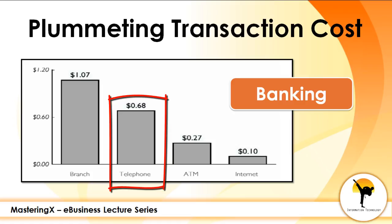There is also an initial cost to build up the infrastructure — the telephone network — which should be efficient to handle the telephone calls. For the customer, there is no traveling cost, only the initial cost to have the telephone. As a result of all of this, the cost is much higher than the internet and ATM modes, but lesser than the branch mode.